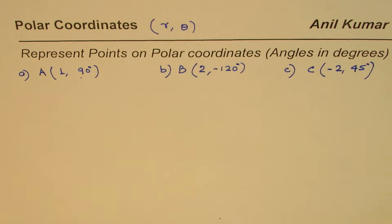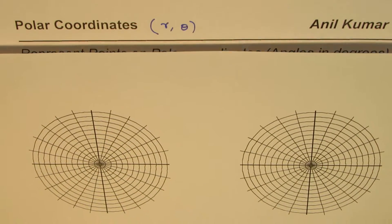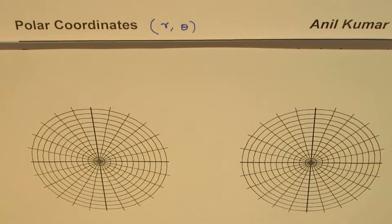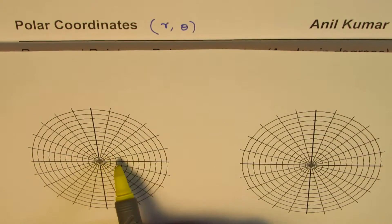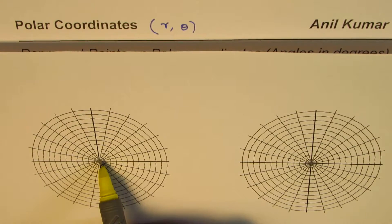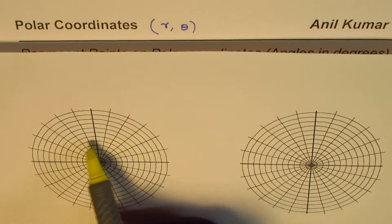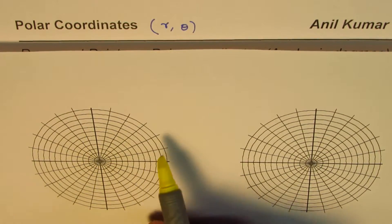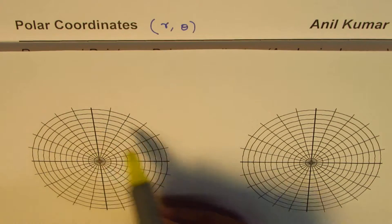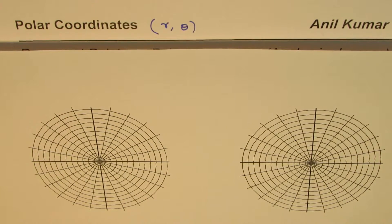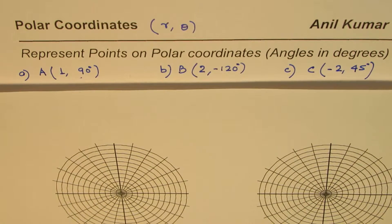For some of you, what you can do is use a graph paper. Here is one I printed from the internet — a polar coordinates graph paper, which is circular with concentric circles. Each circle is one unit away from the pole, so the first circle is unit one, then two, three, four, five, six, and so on. The angles here are divided into multiples of 15 degrees: 15, 30, 45, and so on, making it simpler to accurately plot polar points.